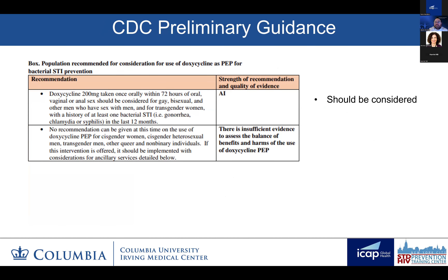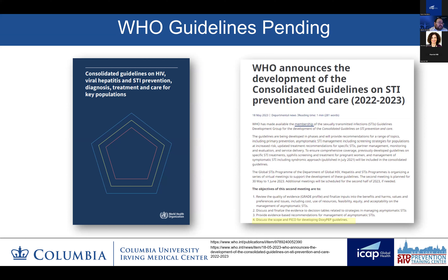In the United States, the CDC has preliminary guidance that's not yet finalized, but they recommend that DOXYPEP be considered for gay, bisexual, and other men who have sex with men, as well as transgender women, with a history of at least one bacterial STI in the prior 12 months—which is essentially the study population of the DOXYPEP and DOXYVAC studies. Worldwide, WHO guidelines are pending. They announced the development of the consolidated guidelines for 2022-2023, and mentioned that one of the objectives of the next meeting was going to be to discuss the scope and PICO for developing DOXYPEP guidelines.